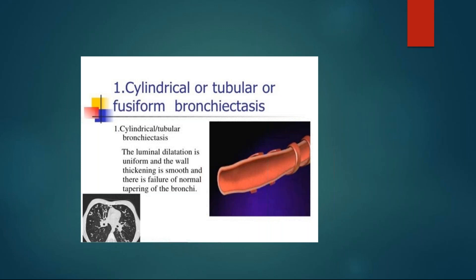In normal airways there is tapering of the bronchi, but in patients with bronchiectasis there is no normal tapering. The airways are uniformly dilated and thickened. This is the picture showing the cylindrical variety of bronchiectasis. The CT picture shows uniform dilated airways without any tapering on the right side.